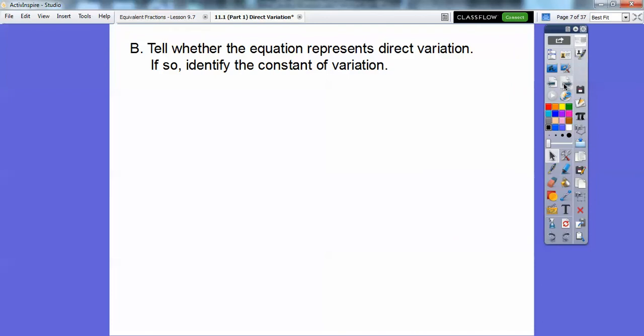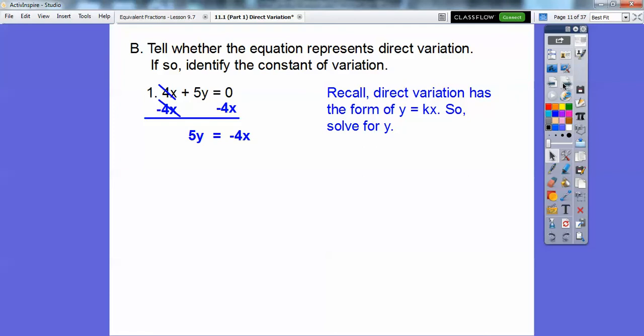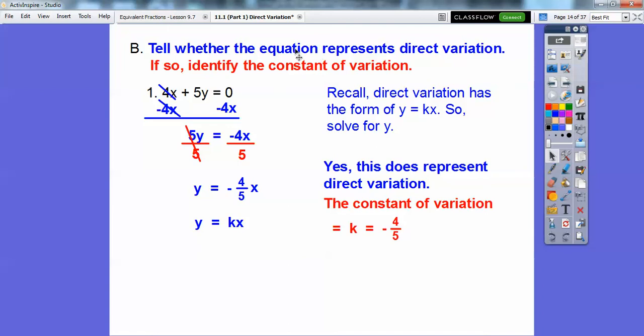So tell whether the equation represents direct variation, and if so, identify the constant of variation. Here's number one. Direct variation is in the form of y equals kx. So let's take this equation and solve it for y. So first we're going to get rid of this 4x on both sides, so subtract 4x. So we get 5y equals negative 4x. Then we divide both sides by 5, and then we get y equals negative 4 fifths x. Now it's in the form of y equals kx, where this time k is that negative 4 fifths. So tell whether the equation represents direct variation. Yes, it represents direct variation. And the constant of variation is that k. So k equals that negative 4 fifths. You just have to solve for y.